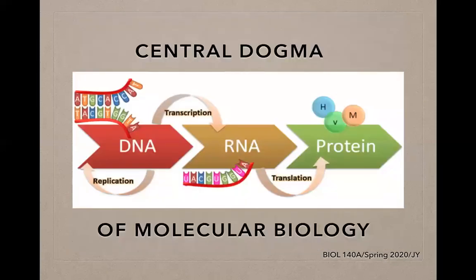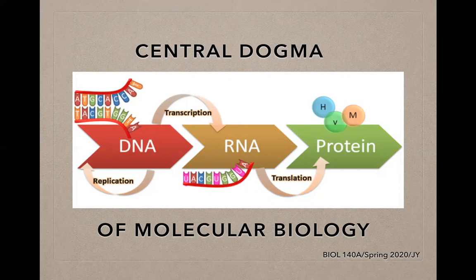Before going further, I want to touch upon the central dogma of molecular biology, which states that DNA is transcribed into RNA and RNA is translated into protein. These two processes — transcription and translation — allow DNA to code for protein. This is relevant because the ultimate end goal of our bacterial transformation experiment is to have protein expression in the E. coli cells, observable under certain conditions.